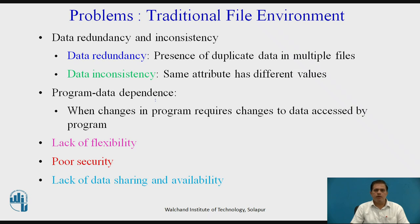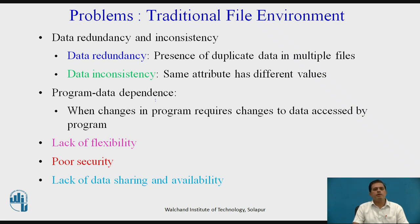The next problem is data inconsistency, where some attributes have different values representing different things. Then there is program-data dependence, when changes in a program require changes to the data accessed by that program. Additional problems include lack of flexibility, poor security, and lack of data sharing and availability. These are the problems we always face in a traditional file environment, leading to the question of how to solve them.